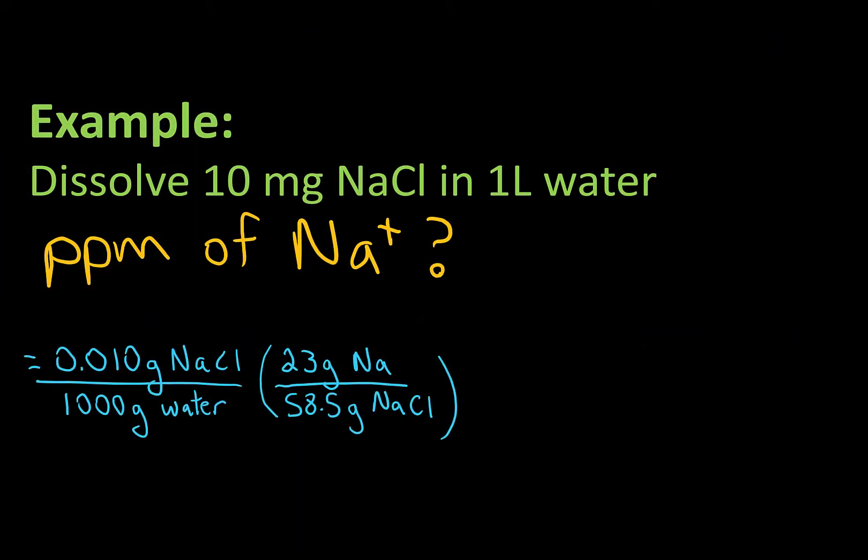So just to finish that off here, if we take that number and we multiply by our 10 to the 6, just to express this as parts per million, then I get 3.9 parts per million of sodium. Remember that that number is less than the 10 ppm of sodium chloride, because we are talking about a different species.